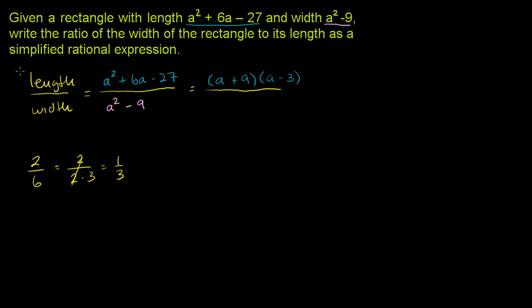What does the bottom expression factor into? This is that standard form, a squared minus b squared, where b is 3, so b squared is 9. This equals a plus b times a minus b. So this factors into a plus 3 times a minus 3.